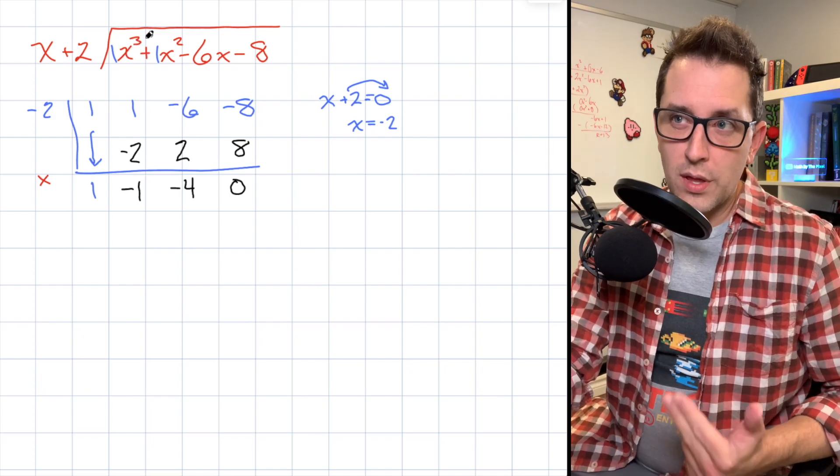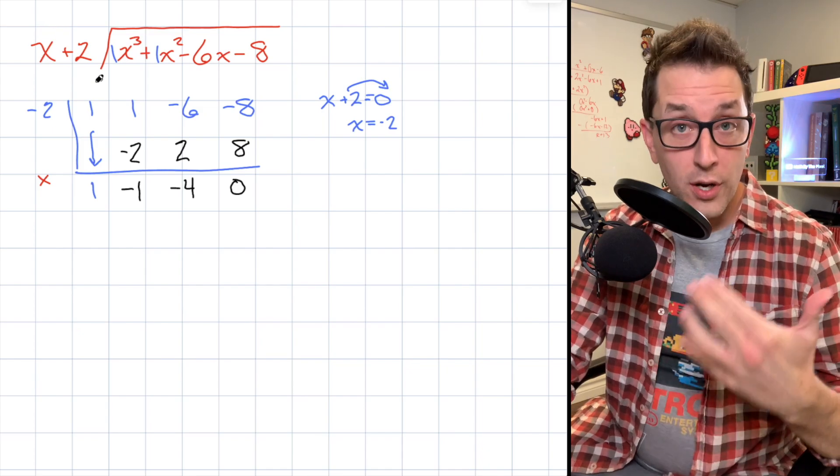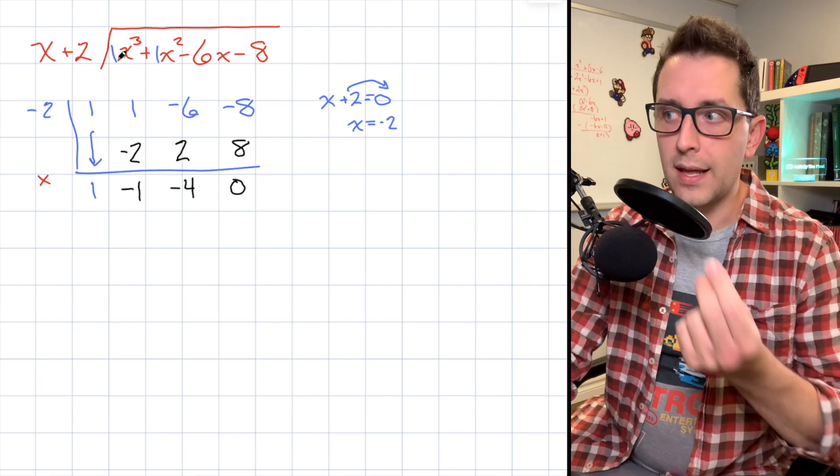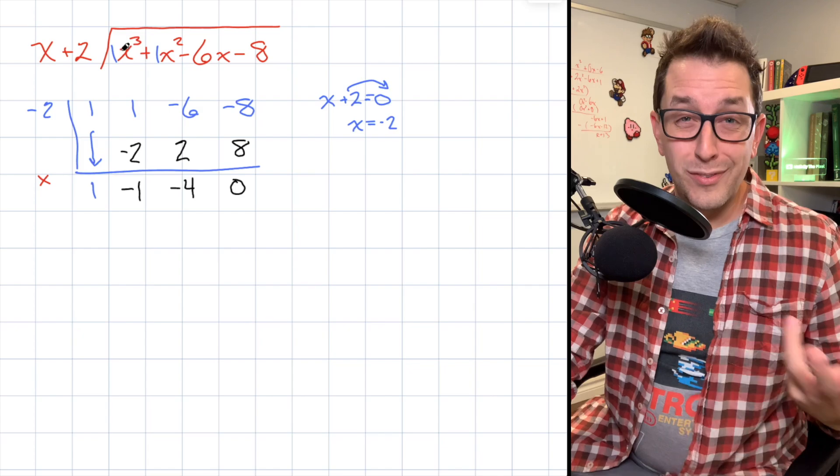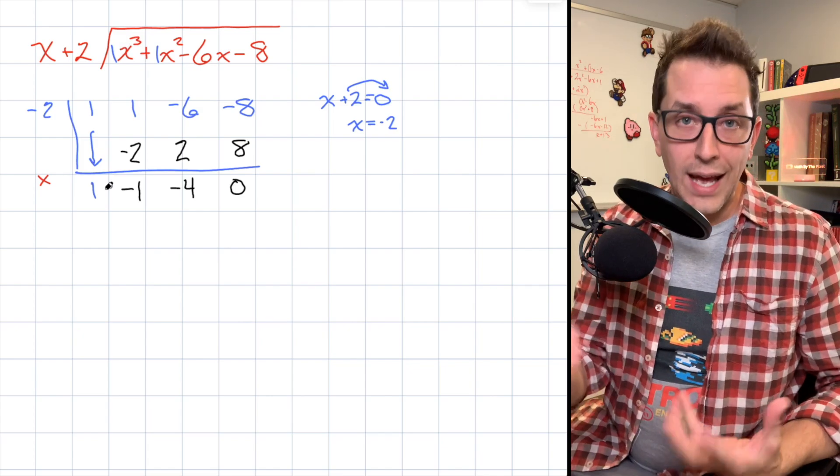Now, since we started with a degree 3 polynomial, and we divided by a binomial with a degree of 1, it should be no surprise here that our quotient will have an exponent that is one less than the dividend. Think about it like we divided out an x from x³. If we take x³ and divide by x, we're going to get x².